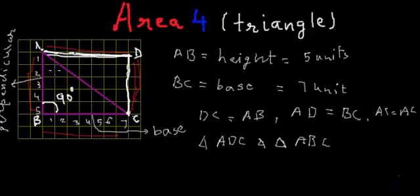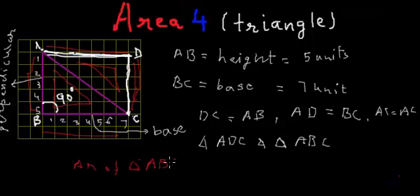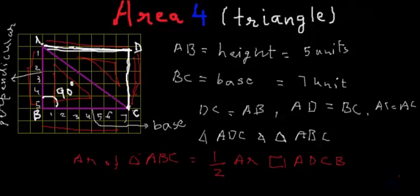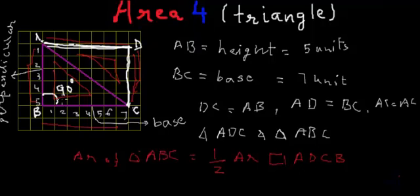That means the area of triangle ABC is actually half of the area of rectangle ABCD. We know the formula for the area of a rectangle, which is length multiplied by breadth. The length of this rectangle is BC, which is 7 units, and the breadth is the length of AB, which is 5 units.